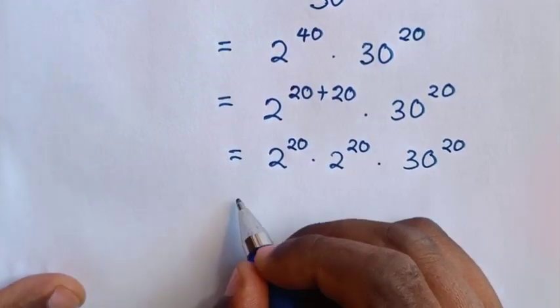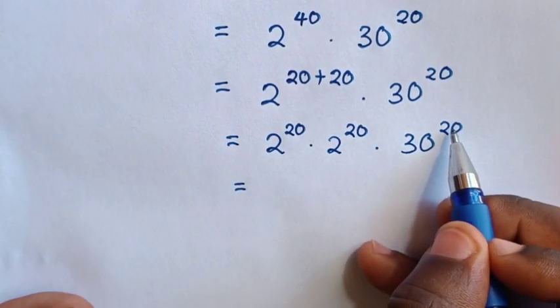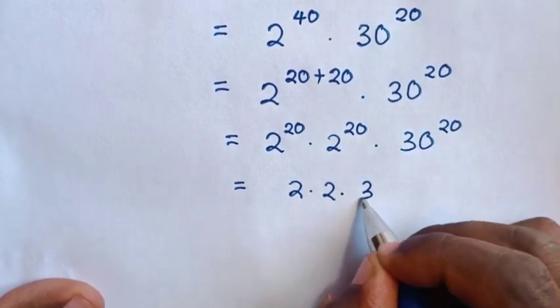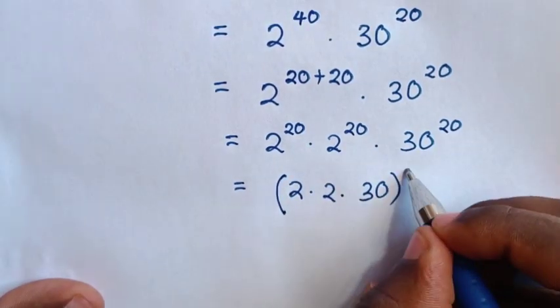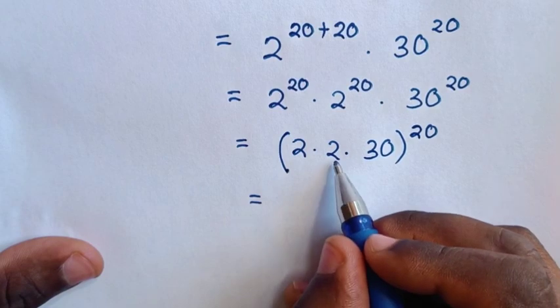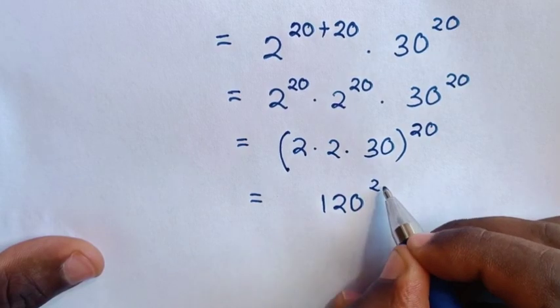Then, this will be equal to, for here we have common power of 20, then, here it will be multiplication of this base 2 times base 30, then bracket power of 20. So, this will be equal to, 2 times 2 is 4, 4 times 30 is 120, power of 20.